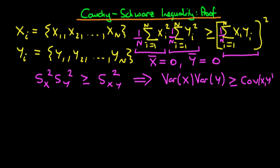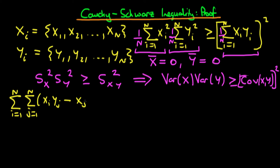So how do we actually go ahead and prove the Cauchy-Schwarz inequality? In order to do this, we're going to define the sum over a particular expression: the sum from i equals 1 to n of the sum from j equals 1 to n of xi times yj minus xj times yi, all squared. It's not immediately clear why we start with this expression, but it's going to yield something useful for proving the Cauchy-Schwarz inequality.